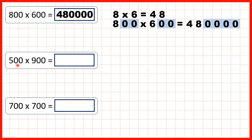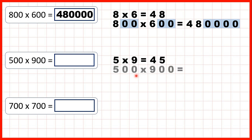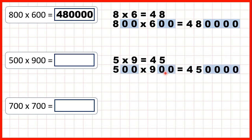Now we have 500 times 900. We know that 5 times 9 is 45, so 500 times 900 is 450,000. That's because after we've done 5 times 9, we can count four end zeros in the question, so we know we need four end zeros in our answer.